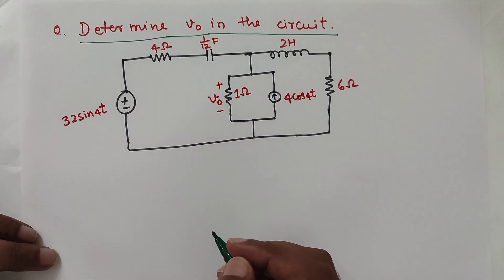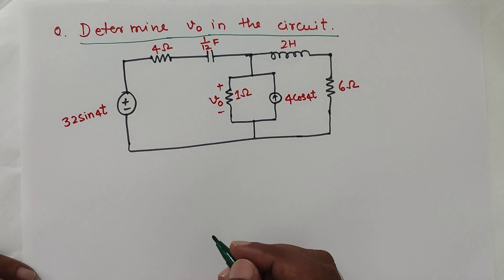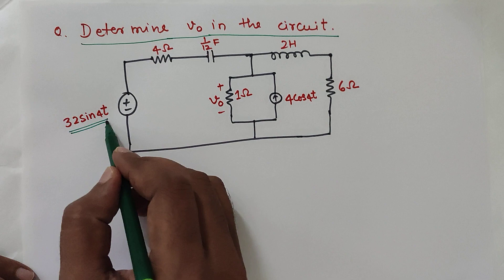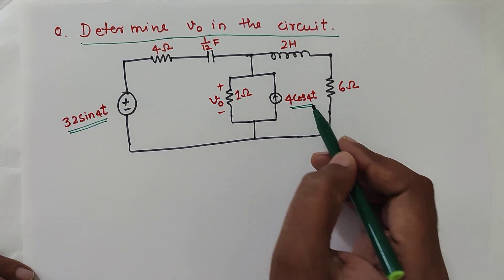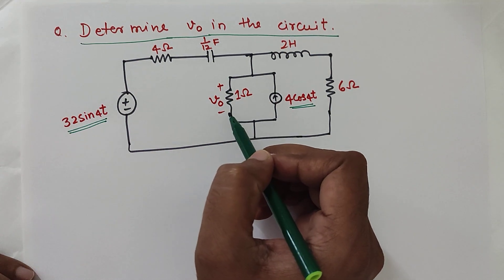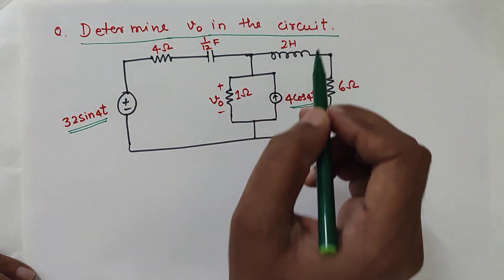Hello friends, welcome to my YouTube channel RF Design Basics. In this video, we will do nodal voltage analysis for a sinusoidal voltage source and current source and we will find out what is the voltage across this 1 ohm resistor. As per the question, determine V0 in the circuit.